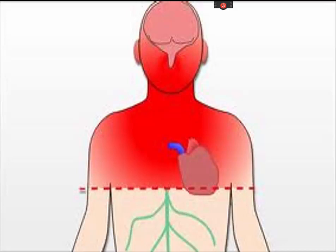The first priority for a patient with spinal cord injury is assessment of the respiratory status and airway patency. Patients with cervical spine injuries are particularly prone to respiratory compromise and may even require intubation.